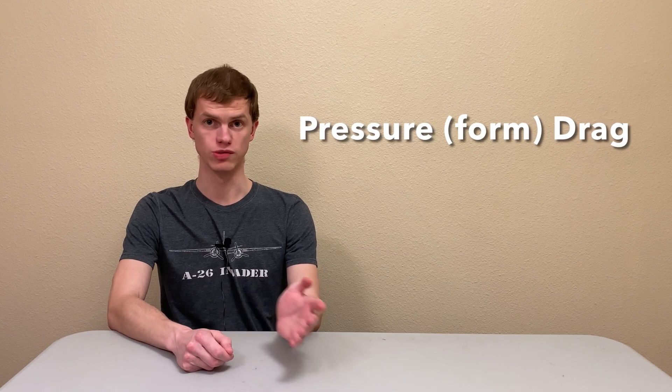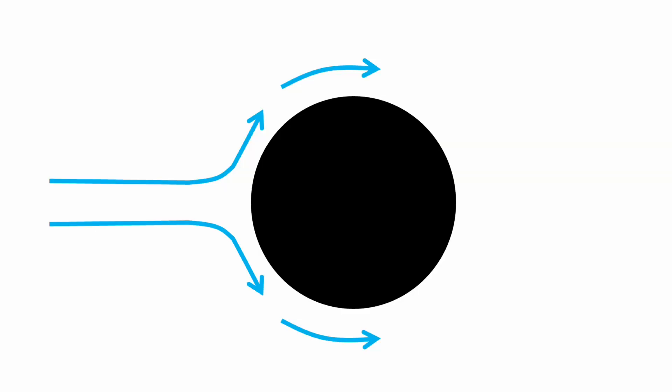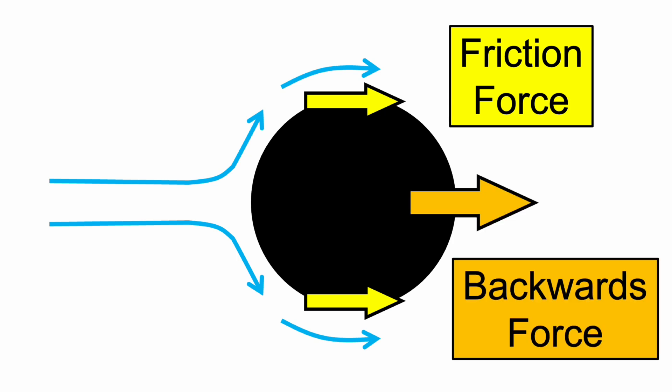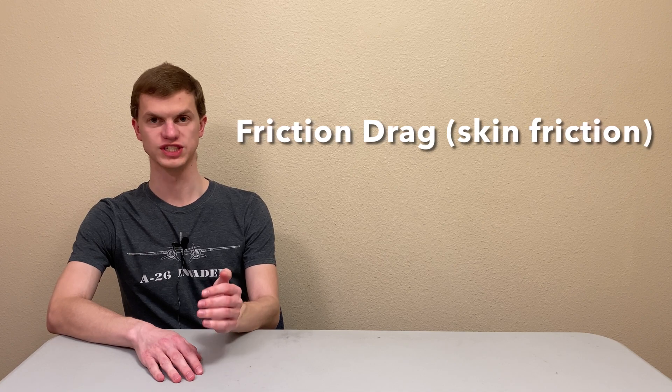Drag force generated from pressure acting on an object is called pressure drag or form drag. Additionally, as the air flows around the object there is friction between the air and the surface, which always acts parallel to the surface. This also contributes to the net backwards force. Drag force generated from this friction is called friction drag or skin friction.